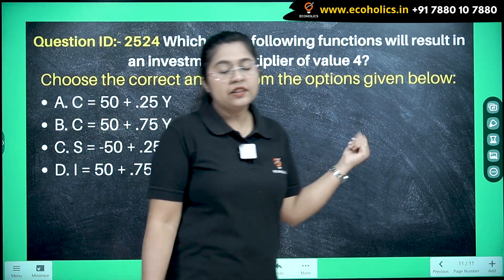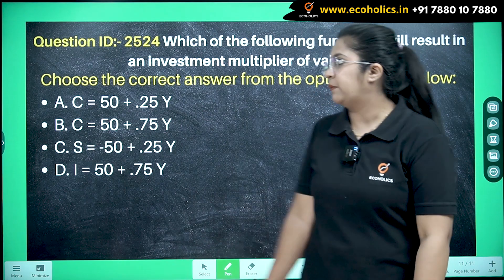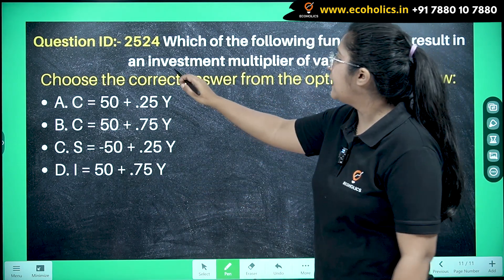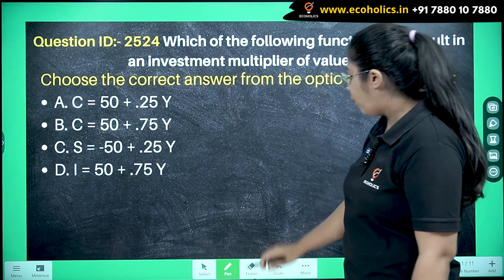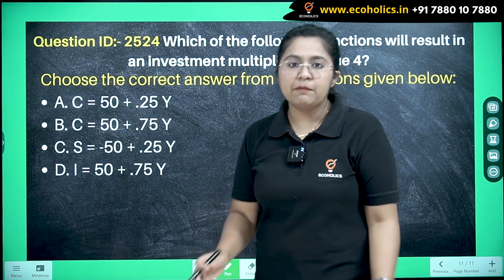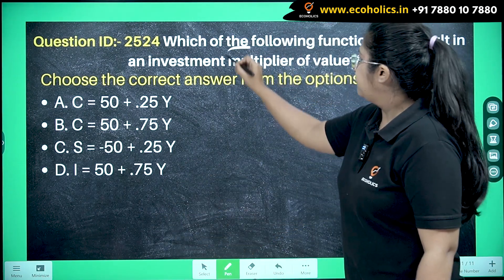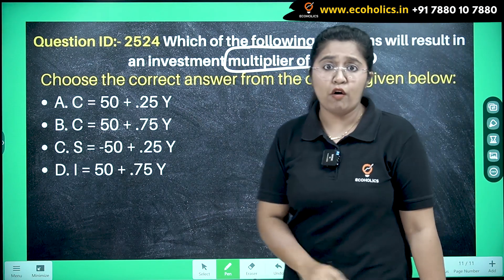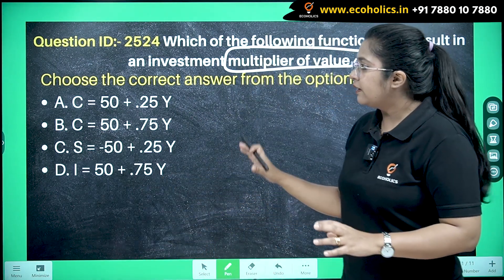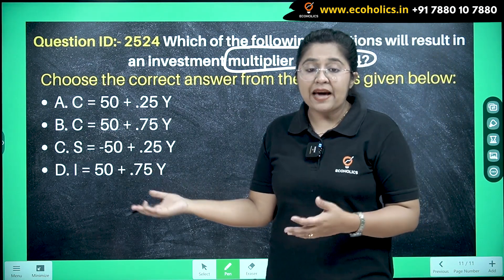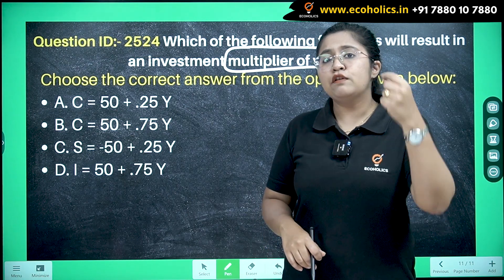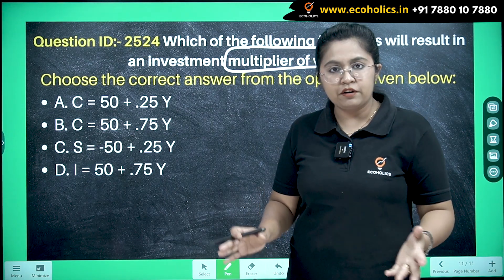This was the question given in last year's paper: which of the following functions will result in an investment multiplier of value 4? Now, the multiplier value is clearly given as 4. Do not be afraid by such questions, because this question is very easy — you just need knowledge of one thing and you're sorted.